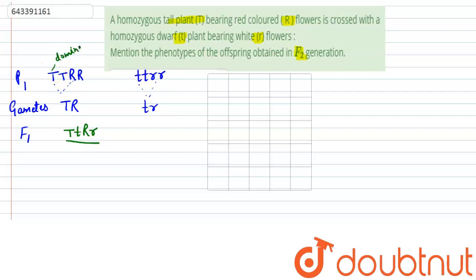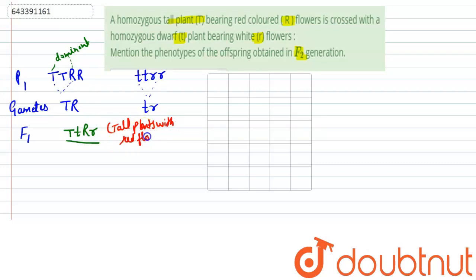Similarly, capital R is also dominant. So in the F1 progeny, they will all be tall plants with red flowers. So F1: tall plants with red flowers.